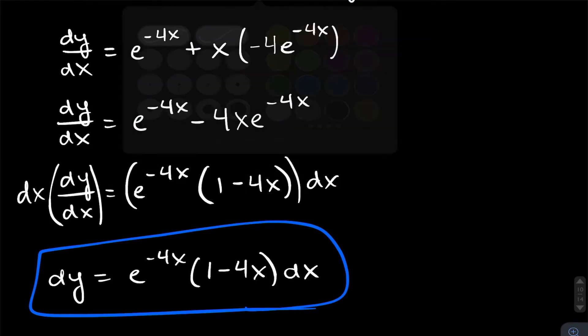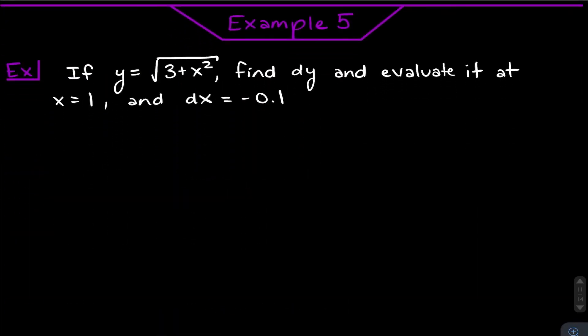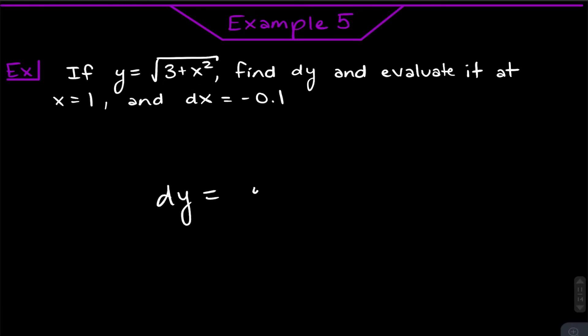For example five, we have y equals the square root of 3 plus x squared. We want to find dy and evaluate it at x equals 1 and dx equals negative 0.1. We're going to find dy again — just taking a derivative, multiplying the dx over — and then plug in x equals 1 and dx equals negative 0.1. At the end, dy will equal some expression with x's and dx in it, and we just plug in those values.